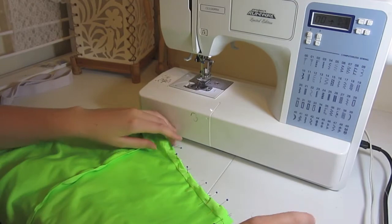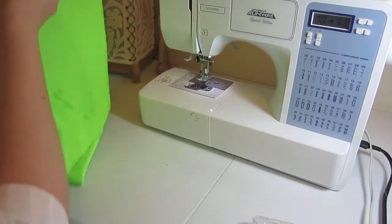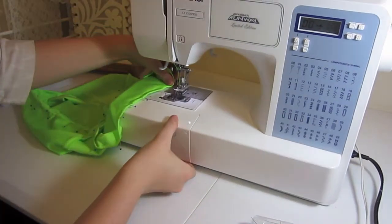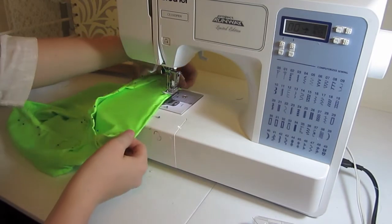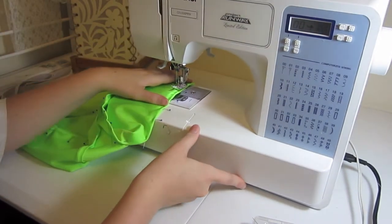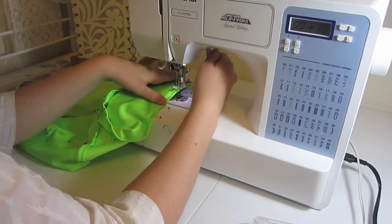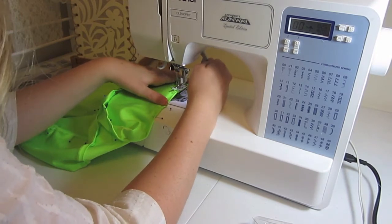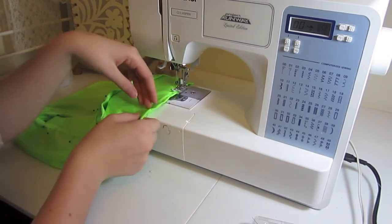So now what I'm going to do is I'm just going to start sewing all the way around. And you want to make sure that the twin needle is on the right side of your fabric because you don't want that to be on the back. And you want to make sure that you're catching on the back as well.